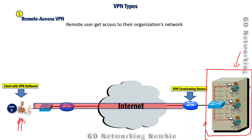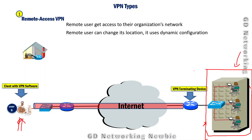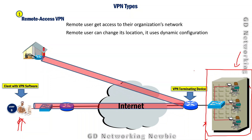The benefit of remote access VPN is that clients can access the organization's private network from anywhere. They can change location — accessing the same network from a restaurant or a hotel — using the internet connection available there to establish a secure tunnel to the organization's network. The VPN configuration in this case is not static but dynamic, depending on the location of the user.